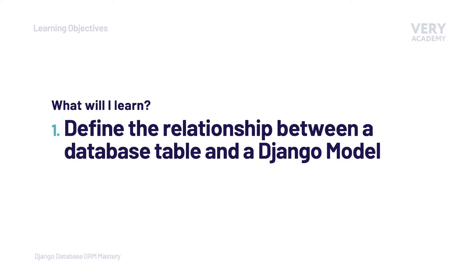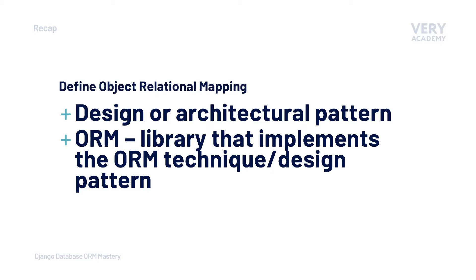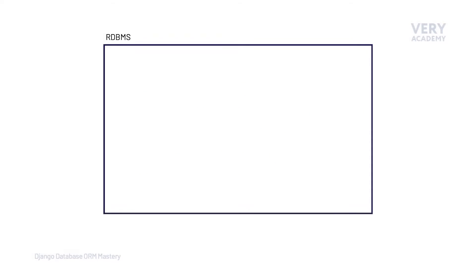In the previous tutorial we defined ORM as a design or architectural pattern. The Django ORM integrates features of this design pattern, which defines how we implement database tables and fields and manage them throughout the life cycle of our application. Before we discuss database tables and fields in the context of a Django project, let's first define a database table and fields in general database terms.